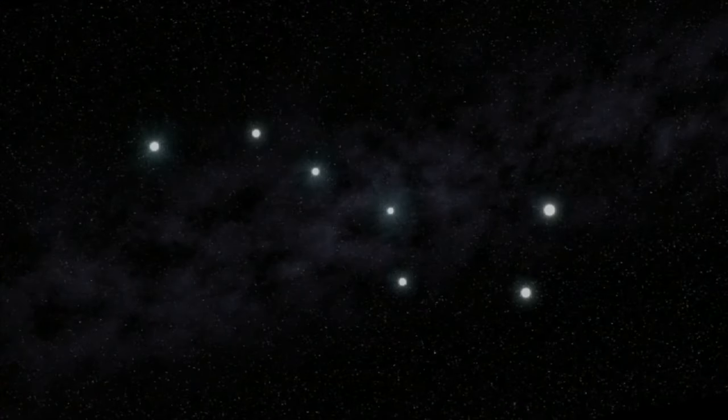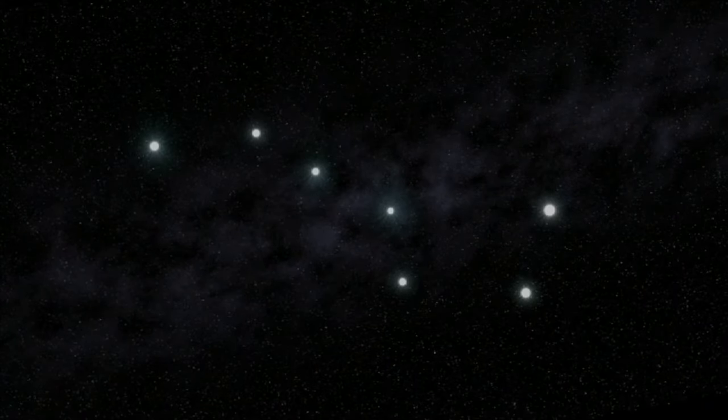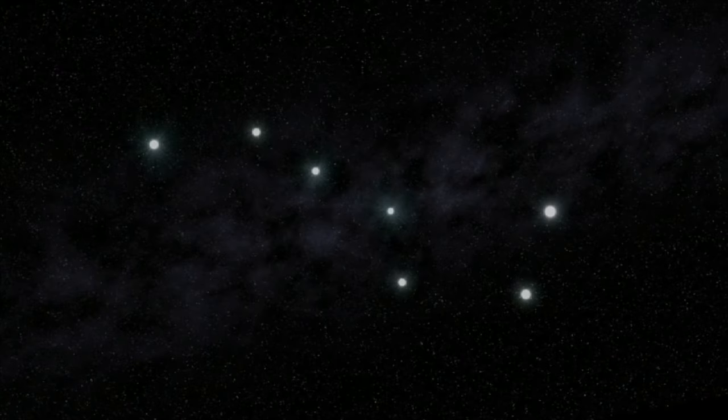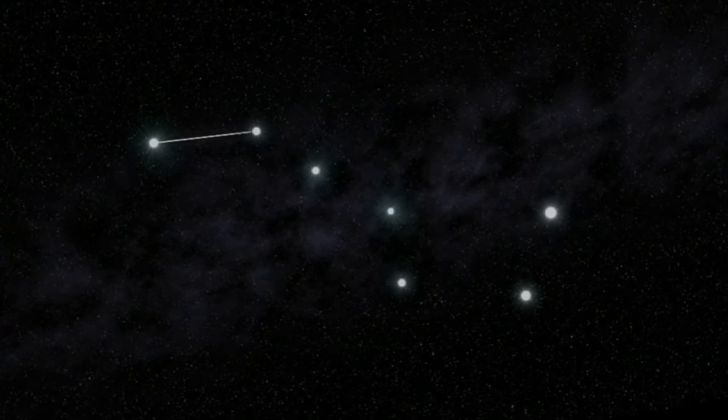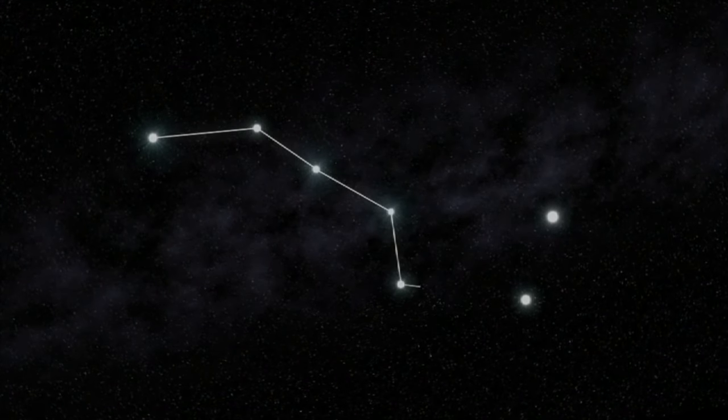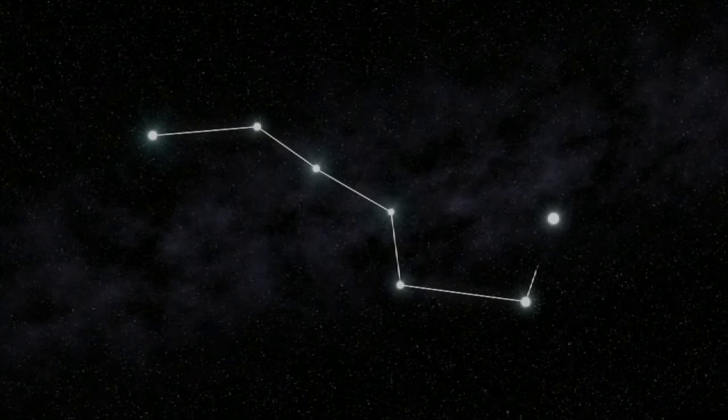Unlike many constellations, the Big Dipper looks like its name. To locate the Big Dipper, find seven of the most vivid stars in the sky. Four of them form a tail-like handle. The remaining three stars make the Big Dipper's bowl.